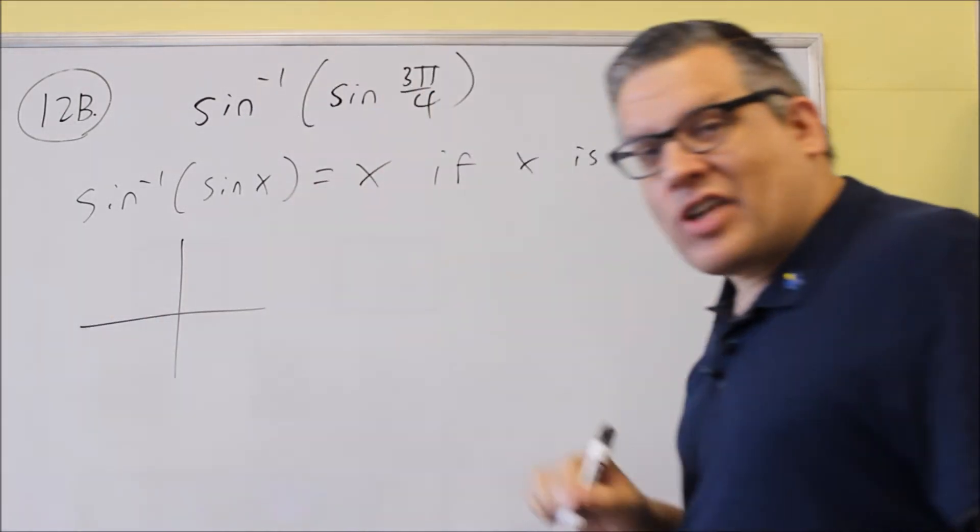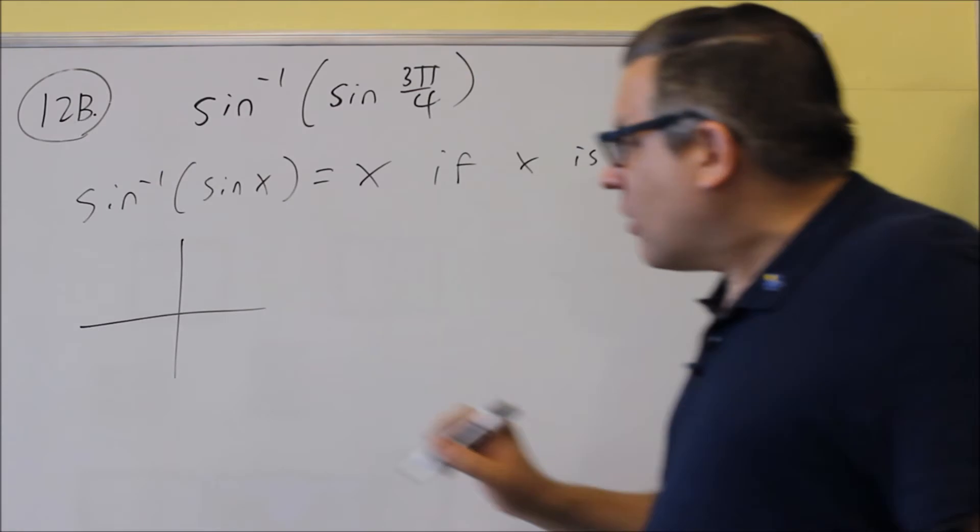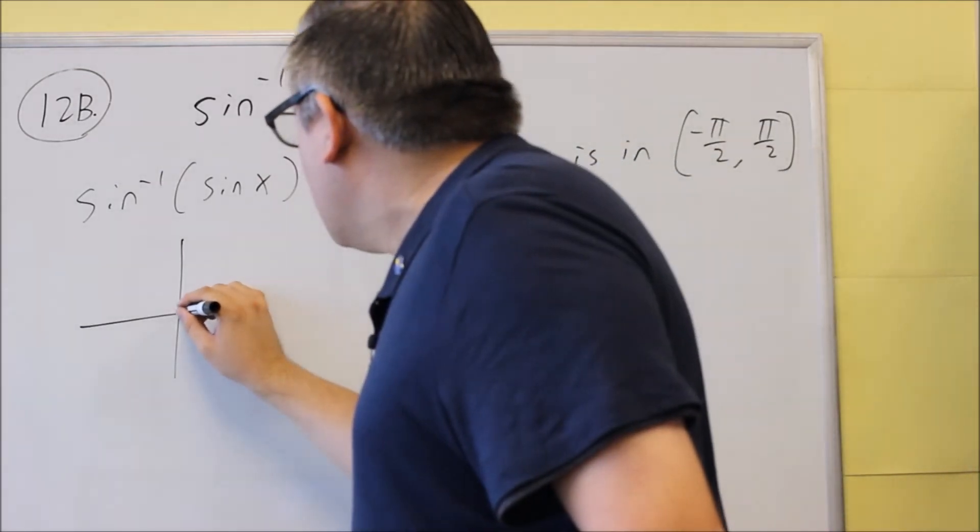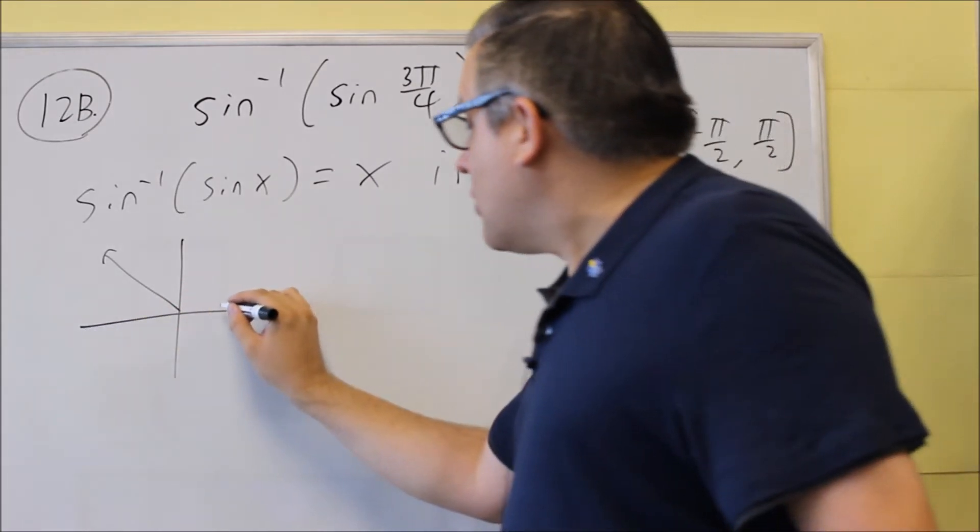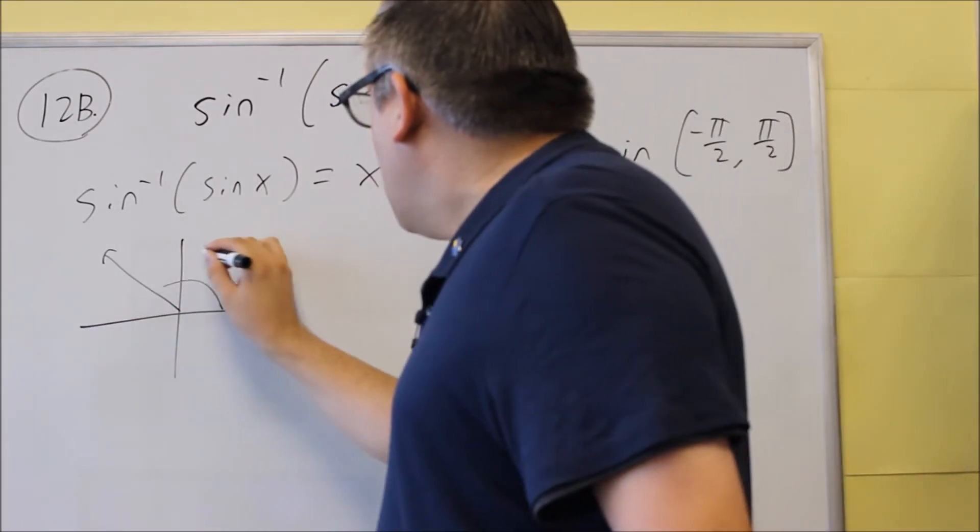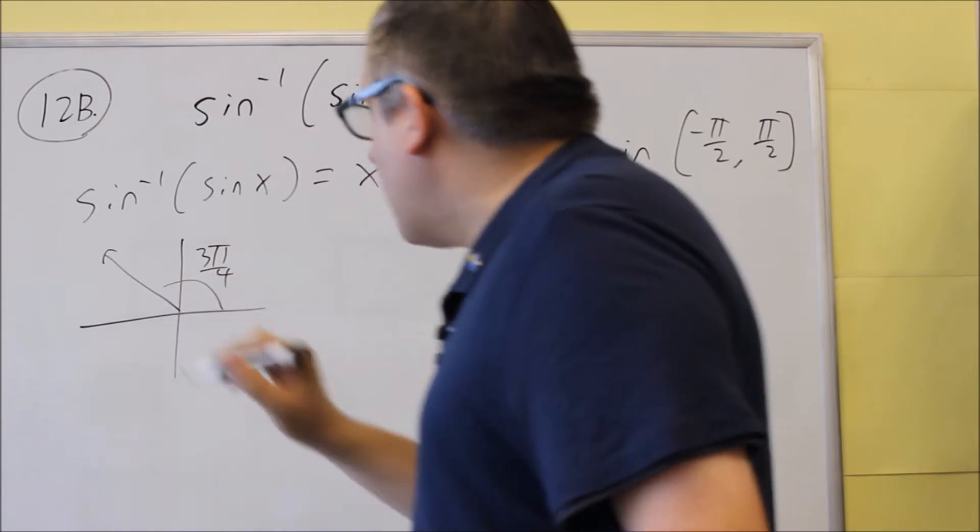Now if you make a little sketch over here, we find out that 3π over 4 is going to be over here. This is between π over 2 and π, and so this angle here would be 3π over 4, which is what we have here.